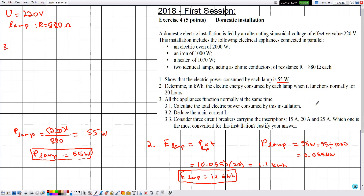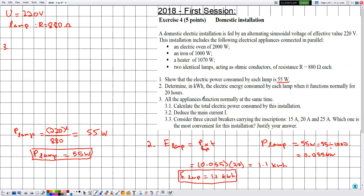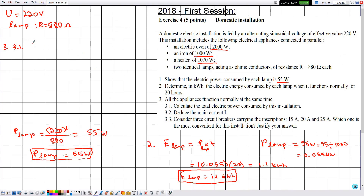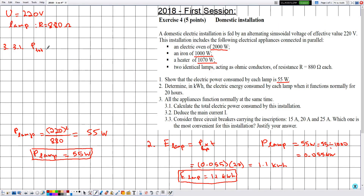In part 3.1, all appliances function normally at the same time. Since all electric appliances are functioning normally we use their rated powers: 2000 watts, 1000 watts, 1070 watts, and 55 watts for each of the two lamps. They ask us to calculate the total electric power consumed by this installation, which is the sum of the electric powers of all the different appliances.